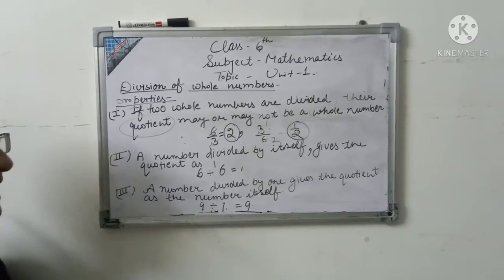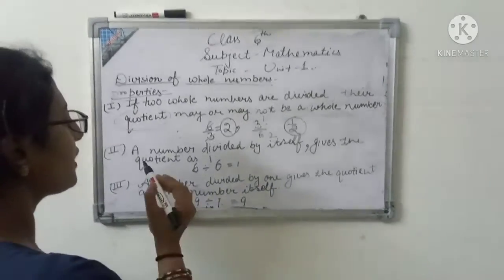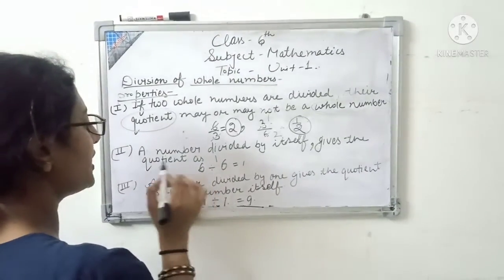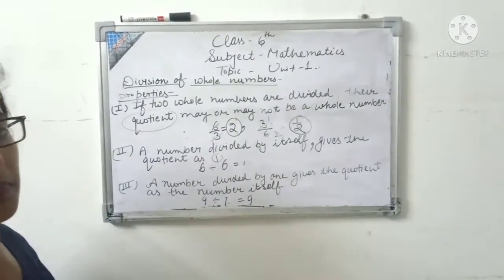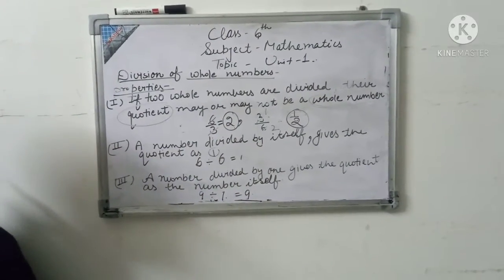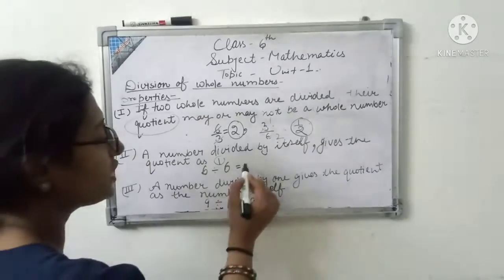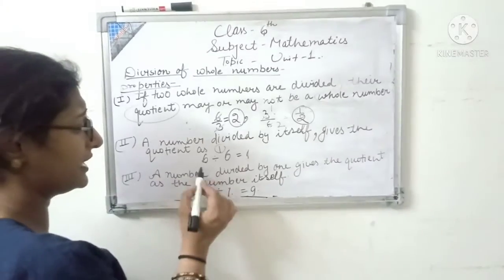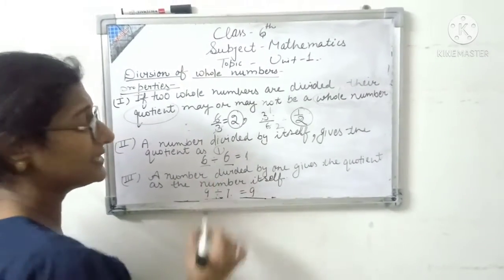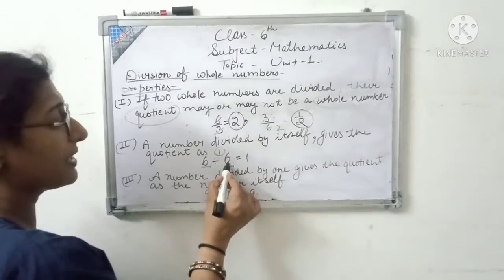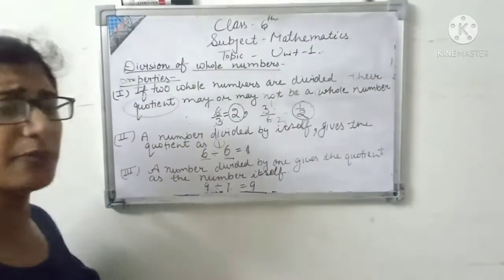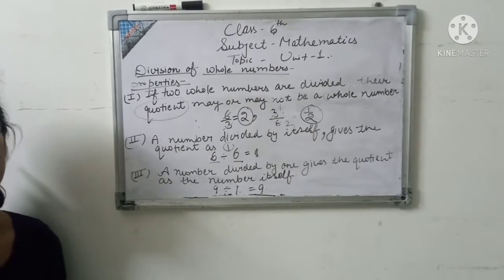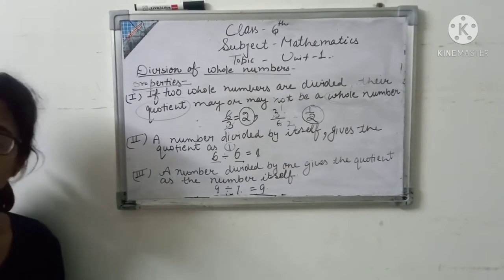Our second property is a number divided by itself gives a quotient as 1. If we divide a number by the same number, the quotient is 1. For example: 6 divided by 6 equals 1, 9 divided by 9 equals 1, 2 divided by 2 equals 1. Clear?